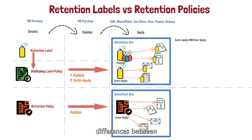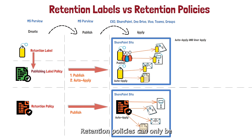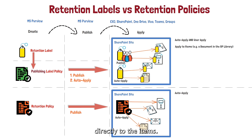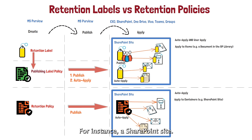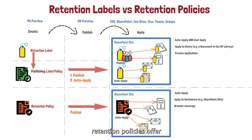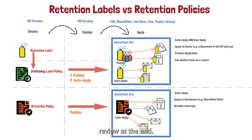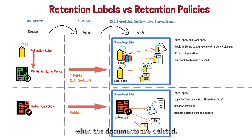Let's go over some key differences between retention labels and retention policies. Retention labels can be auto-applied or manually applied by end users. Retention policies can only be auto-applied. Retention labels are applied directly to items. Retention policies are applied to containers only, for instance a SharePoint site. Retention labels offer precise application. Retention policies offer broad application. Retention labels can be auto-applied and have a disposition review at the end. Retention policies cannot declare an item as a record, and there will be no disposition review when documents are deleted.